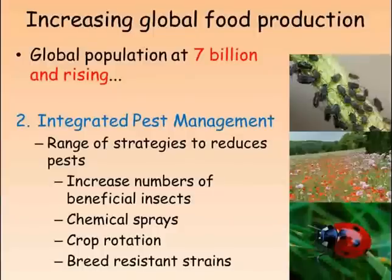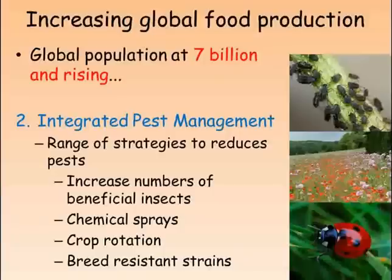Another way of increasing the amount of food being produced is to reduce the amount lost to pests. A system known as integrated pest management brings together a range of strategies with this aim. Firstly, natural predators such as hoverflies and beetles that feed on pest insects are attracted into the fields, for example by having banks of wildflowers around the border. If levels of pests get too high, pesticides can be sprayed to kill them, but these chemicals may also kill some of the natural predators. Rotating crops so that different species are planted in the same field in a cycle over several years helps avoid pests and pathogens specific to one plant building up to high levels.